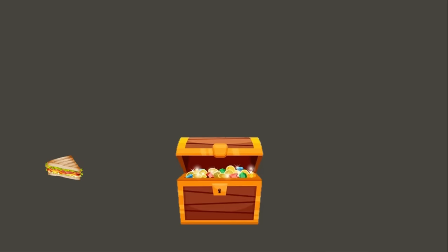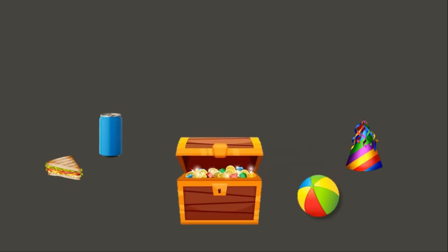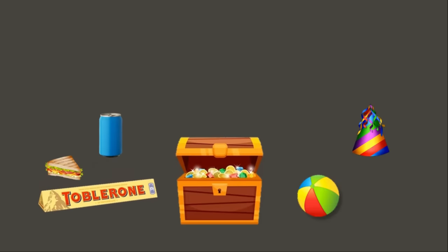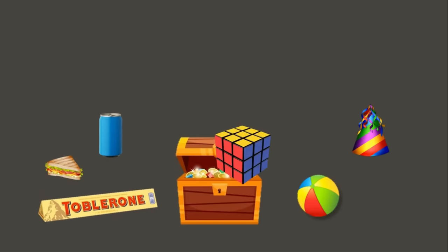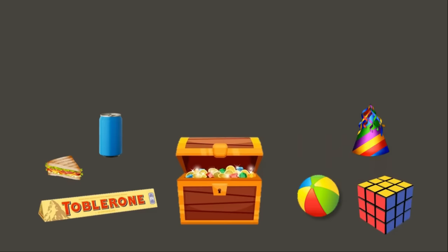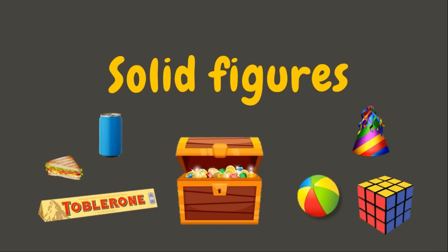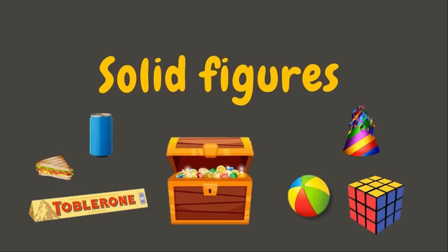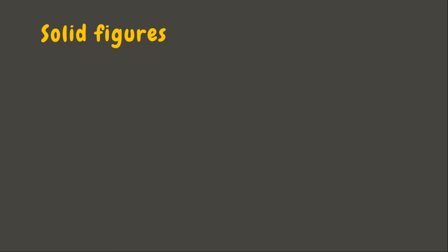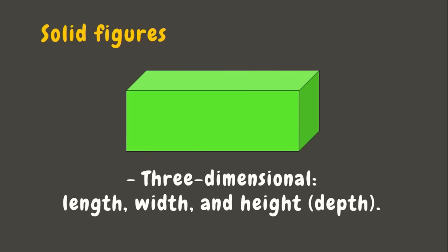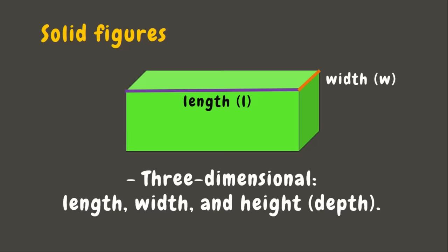We have here a sandwich, a ball, a can of soda, a party hat, a bar of chocolate, and a Rubik's cube. These are examples of solid figures. Solid figures have three dimensions: length, width, and height.